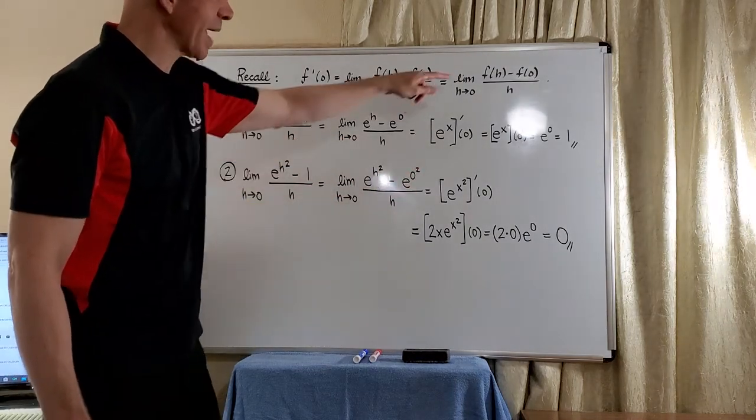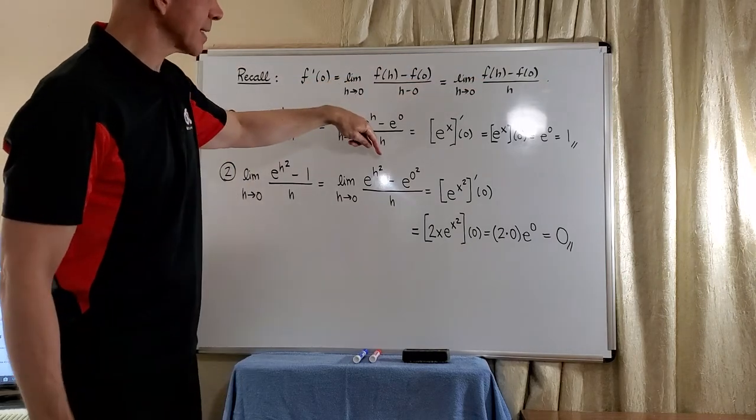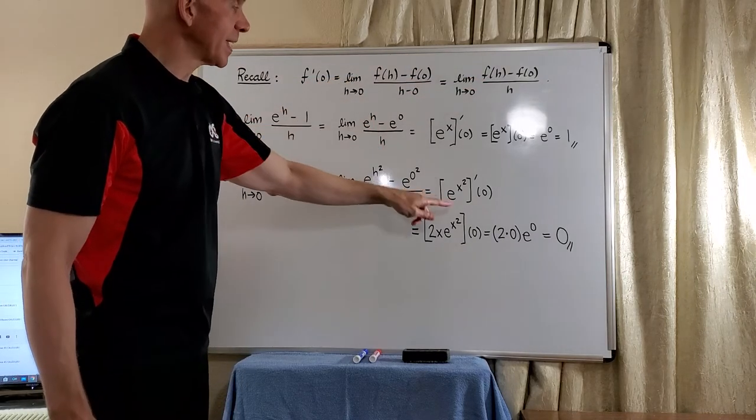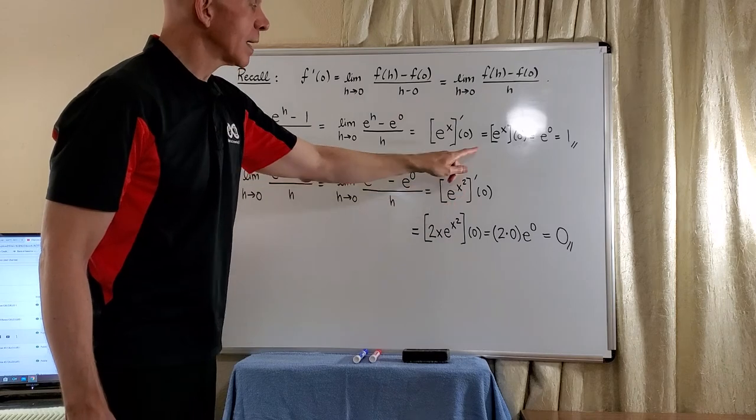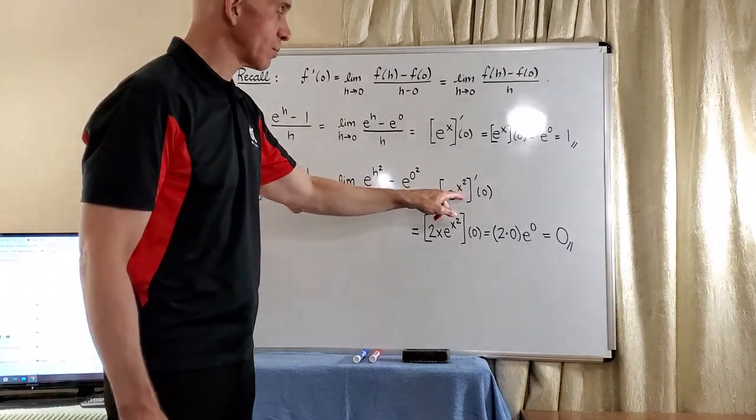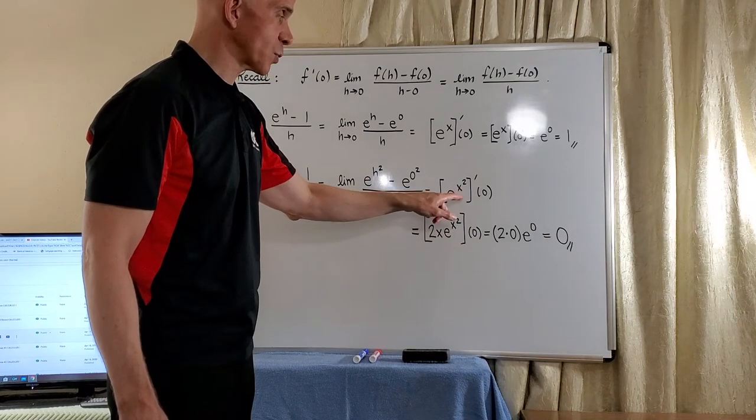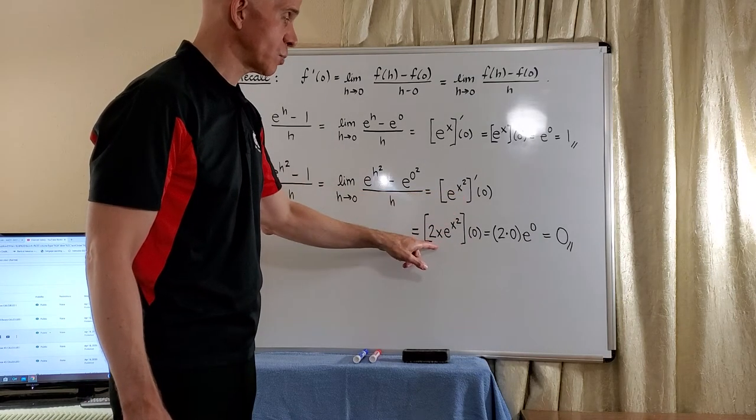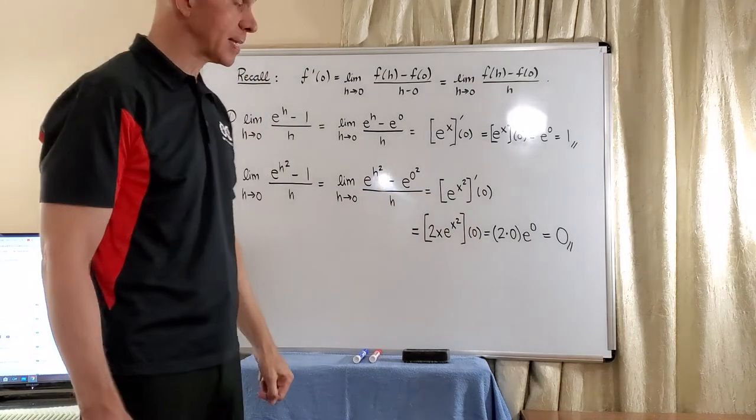So now you can see this maps into this. So we basically have the derivative of e to the x squared evaluated at 0. Okay, well, we just use the chain rule. We have e to the x times the derivative of x squared, which is 2x. Evaluate that at 0.